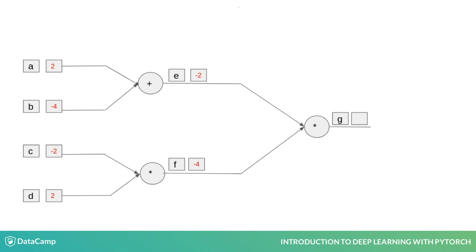Now, our nodes in the graph are nodes E and F, containing values minus 2 and minus 4. The last step is to multiply these two values and put the result in G. We do that, getting minus 2 times minus 4 equals 8, and so finishing our exercise.